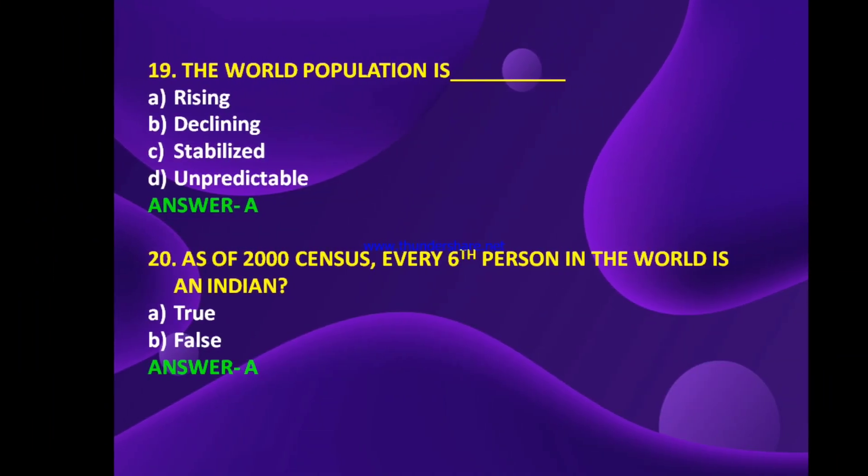The world population is — rising, declining, stabilized, or unpredictable? The answer is A — rising. The world population is rising. As of the 2000 census, every 6th person in the world is an Indian — true or false? The answer is true — as of the 2000 census, every 6th person in the world is an Indian.